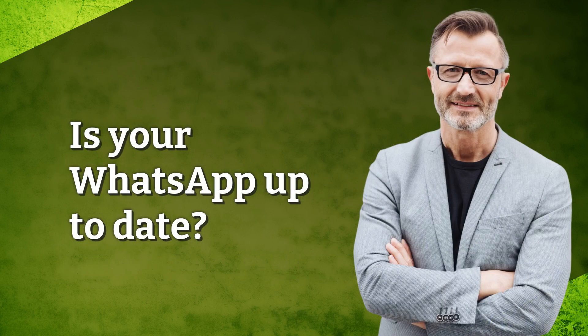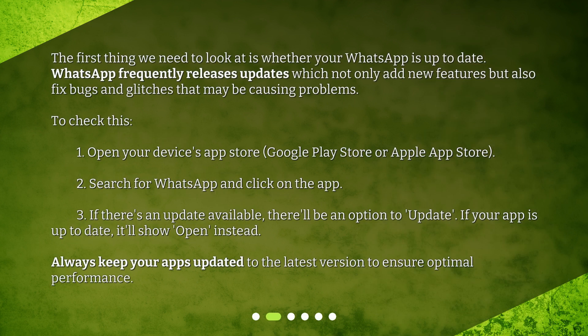The first thing we need to look at is whether your WhatsApp is up to date. WhatsApp frequently releases updates which not only add new features, but also fix bugs and glitches that may be causing problems. To check this: open your device's App Store — Google Play Store or Apple App Store — search for WhatsApp and click on the app. If there's an update available, there'll be an option to update. If your app is up to date, it'll show 'Open' instead. Always keep your apps updated to the latest version to ensure optimal performance.